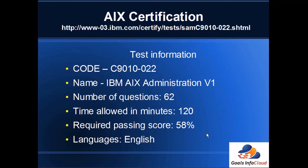For certification, visit www-03.ibm.com/certify/test/samc9010-022.shtml. The test name is IBM AIX Administration Version 1. In this test you will get 62 questions, time allowed is 120 minutes, you need to score a minimum of 58% to pass, and the language is English.